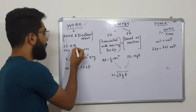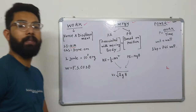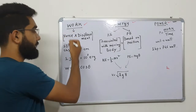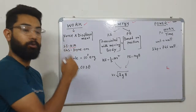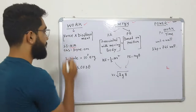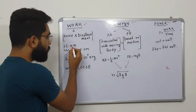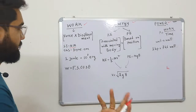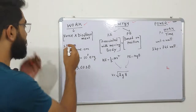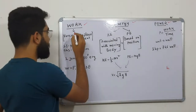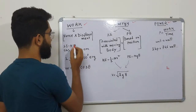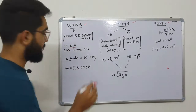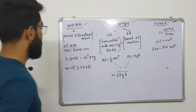Now look at the units. Force is in the first place. The unit is Nm — N is Newton. Force is Newton. So force into displacement means Newton into meter.